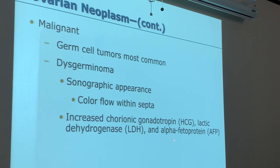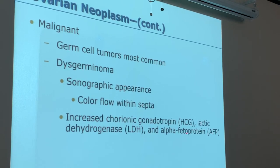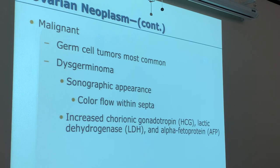Malignancy markers include alpha fetal protein (AFP) and LDH. AFP is produced by the fetus, so you should never see an elevation of AFP in normal circumstances. LDH — lactate dehydrogenase — is one of the labs associated with the liver that we also monitor.